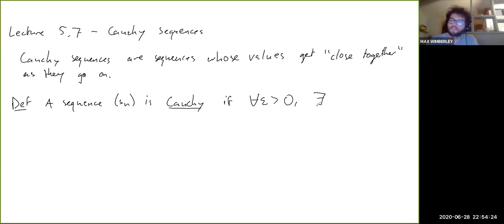So it looks very similar to the definition of normal convergence. There exists a capital N such that now we're going to say for all N and M bigger than capital N, we have SN minus SM is less than epsilon. Okay.